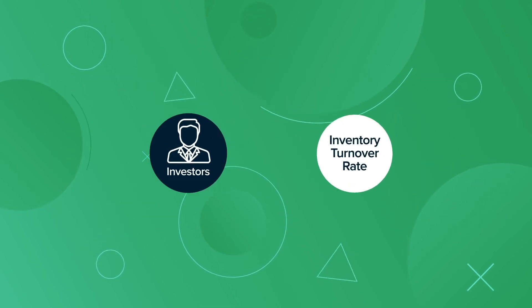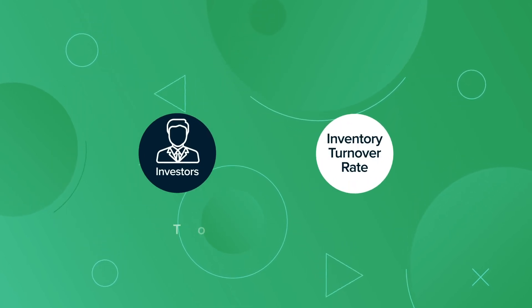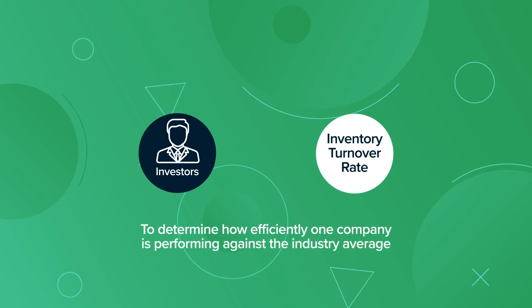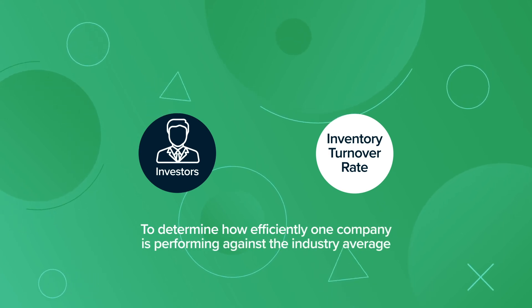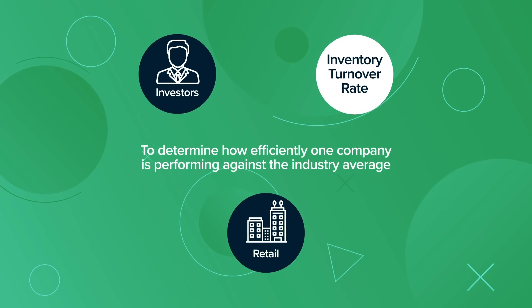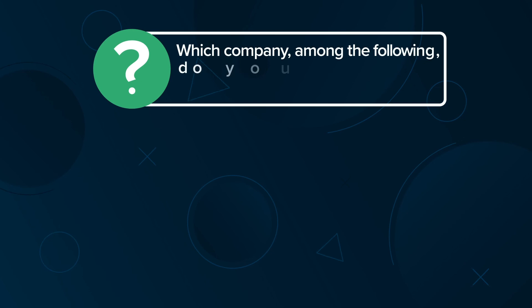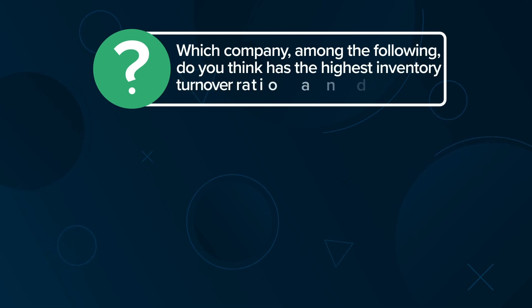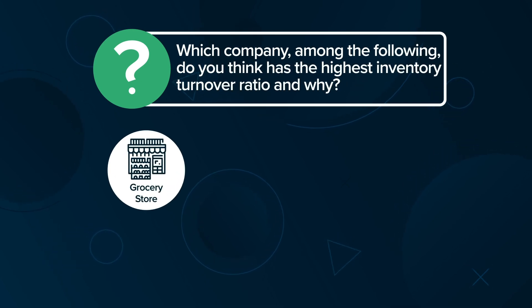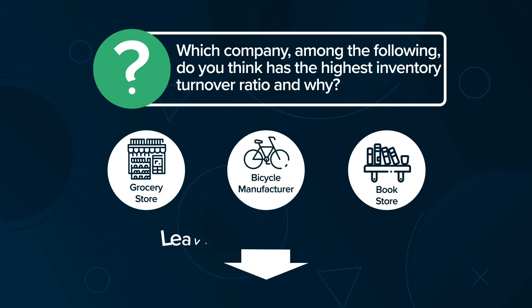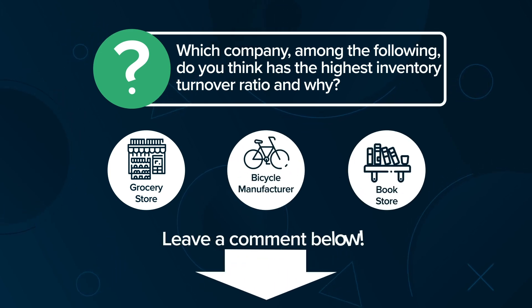Investors like to know the inventory turnover rate to determine how efficiently one company is performing against the industry average, and it is particularly useful for the retail industry. Which company among the following do you think has the highest inventory turnover ratio and why? A grocery store, a bicycle manufacturer, or a bookstore? Leave your answer in the comments below.